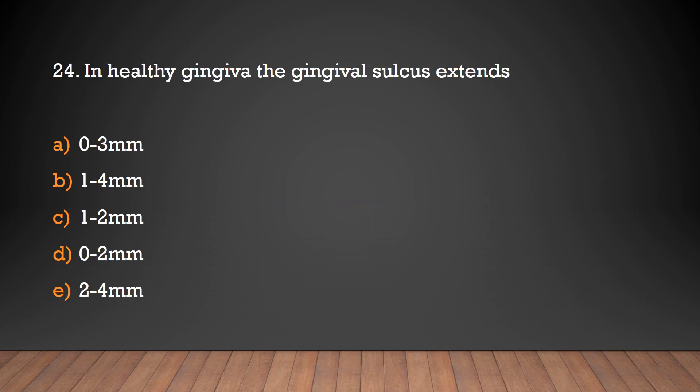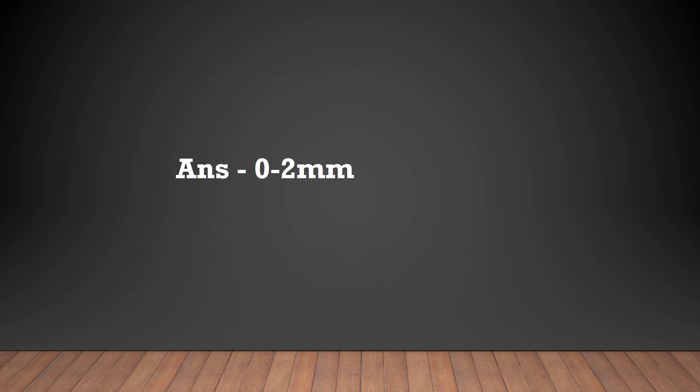In healthy gingiva, the gingival sulcus extends: 0–3mm, 1–4mm, 1–2mm, 0–2mm, or 2–4mm? The answer is 0–2mm.